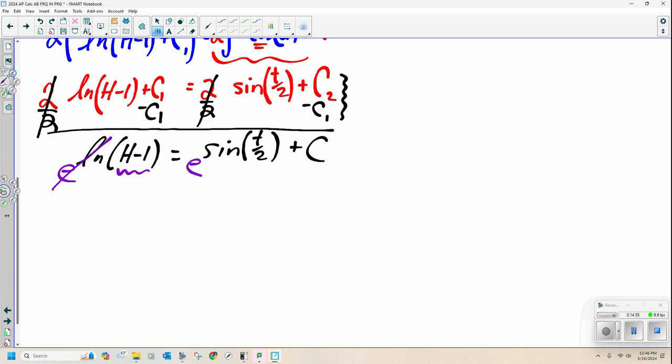And I've just got h minus 1. Equals. All right. When I add two things in the exponents, that means I multiplied similar bases. Okay? E is a constant. A constant raised to a constant is just a constant.